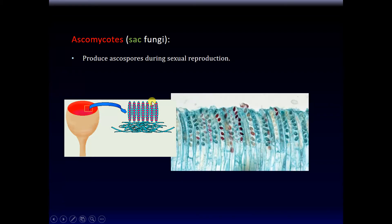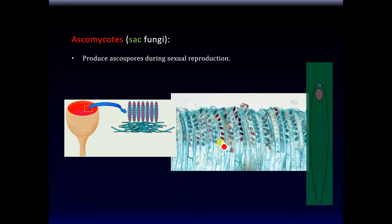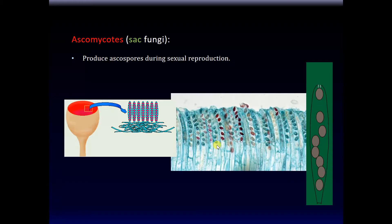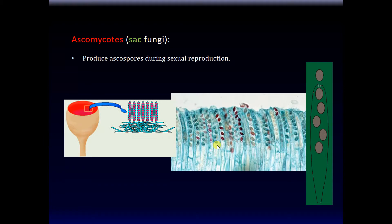Here's the picture of the conidiophores and each individual tiny spore that's going to fly off. Once the ascospores are formed, they are released one at a time — slowly they are released. That's how that works.